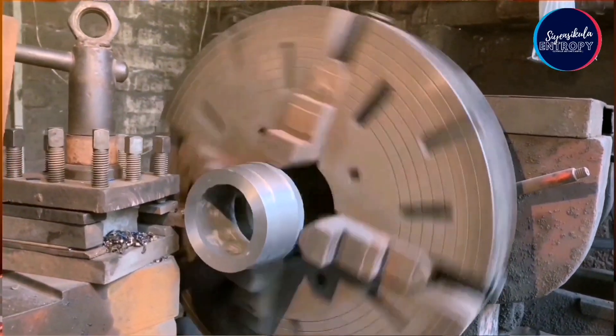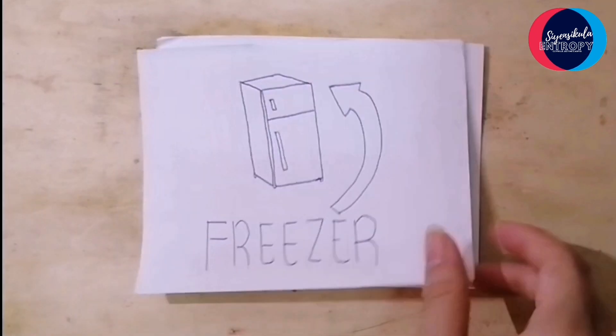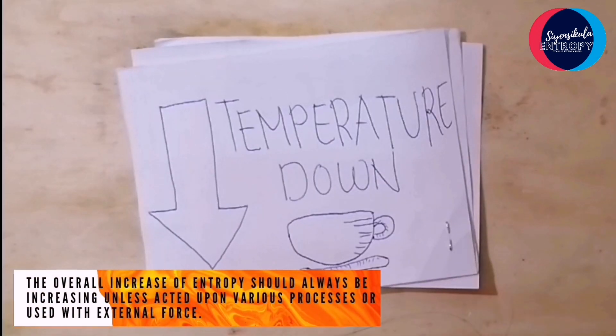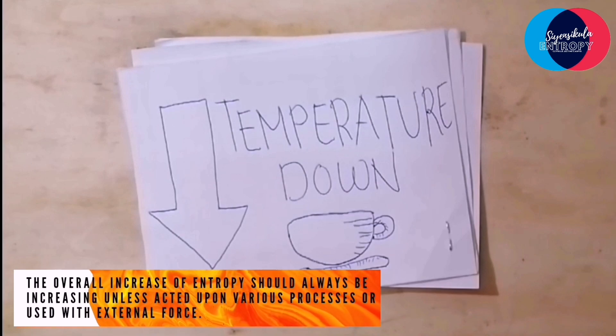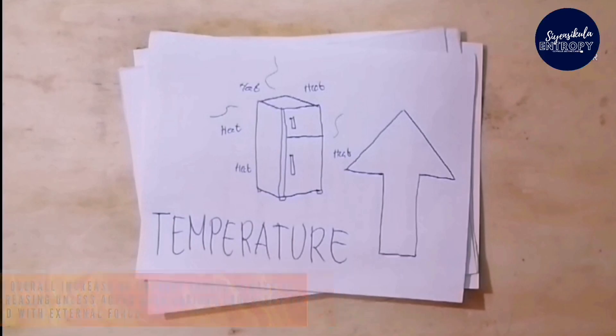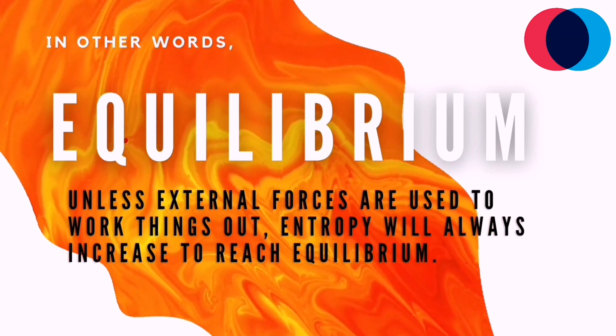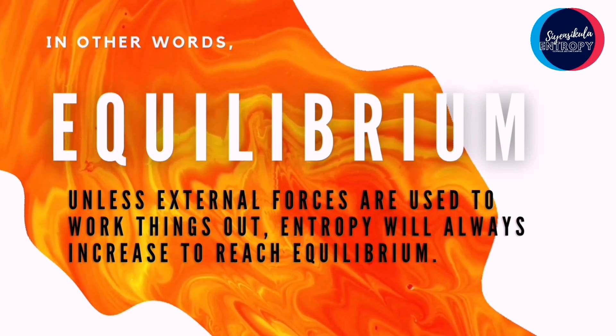However, heat cannot transfer energy spontaneously the other way around — but it's still possible. For instance, if the system's entropy drops, it may be necessary to combine various processes or employ an external force to maintain the overall increase of entropy. Like how hot water placed in a freezer will quickly cool. But in order to maintain the decrease in entropy inside the freezer, the refrigerator will release heat, causing its environment to rise in entropy. In other words, unless external forces are used, entropy will always increase to reach equilibrium.